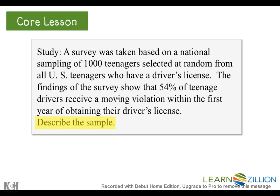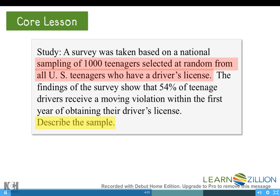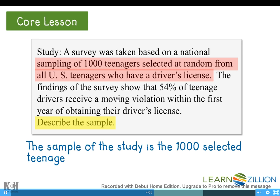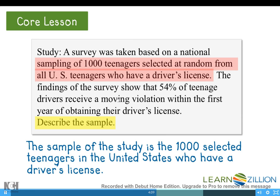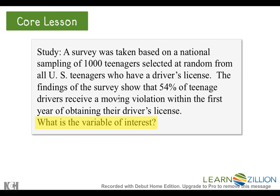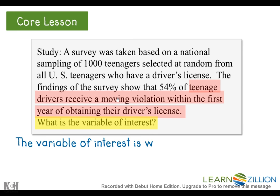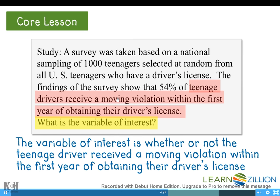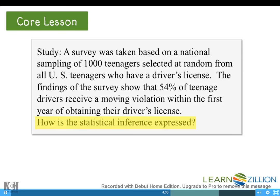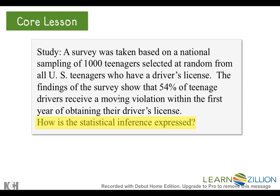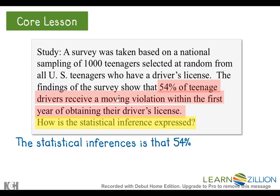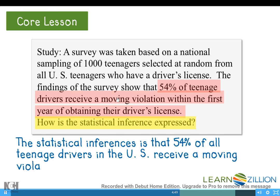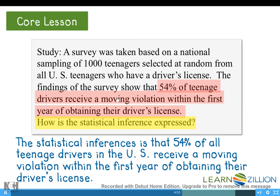The sample in this study consists of everyone who is surveyed from the population — in this problem, the 1,000 selected teenagers in the United States who have a driver's license. The variable of interest is whether or not the teenage driver received a moving violation within the first year. The parameter is the 54% of all teenage drivers in the United States who receive a moving violation within the first year.